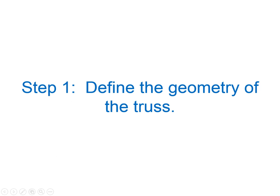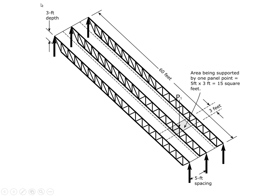The first thing we're going to do is define the geometry of the truss. In this case we're going to look at a truss that's sixty feet long and has a depth of three feet — basically a truss with a depth that is one twentieth of the length, which is a common proportion. In this case we're going to assume square bays.